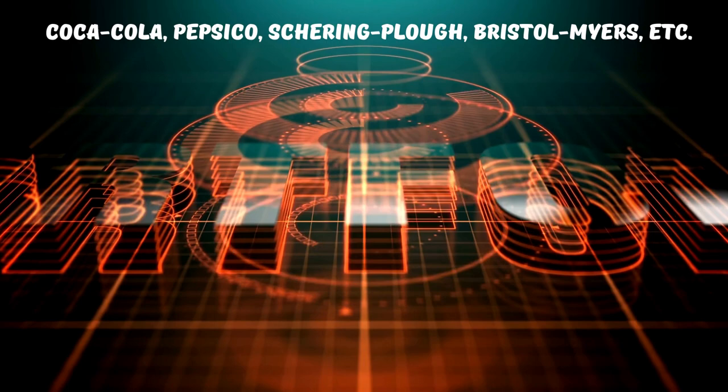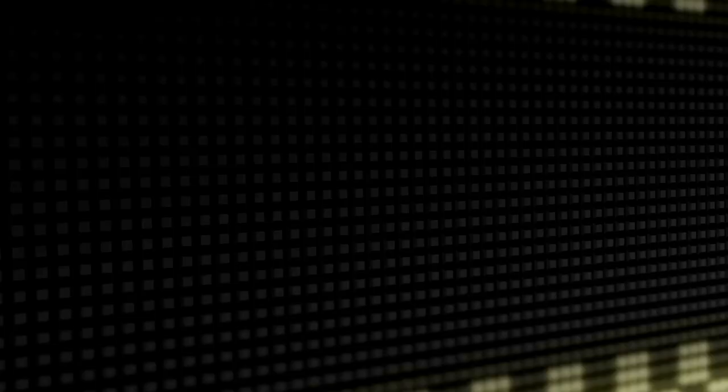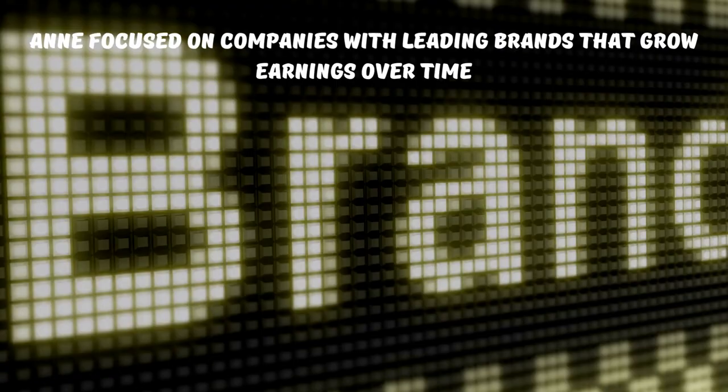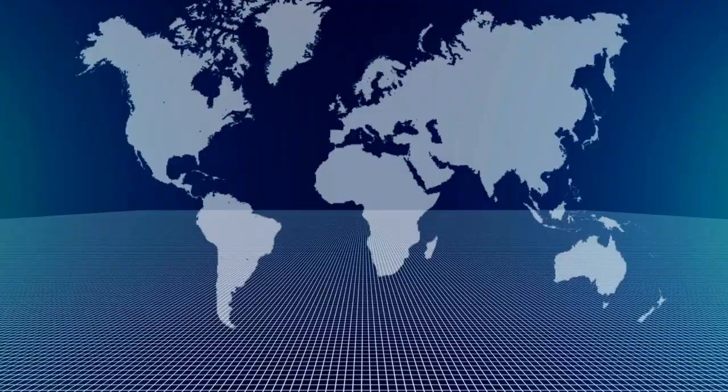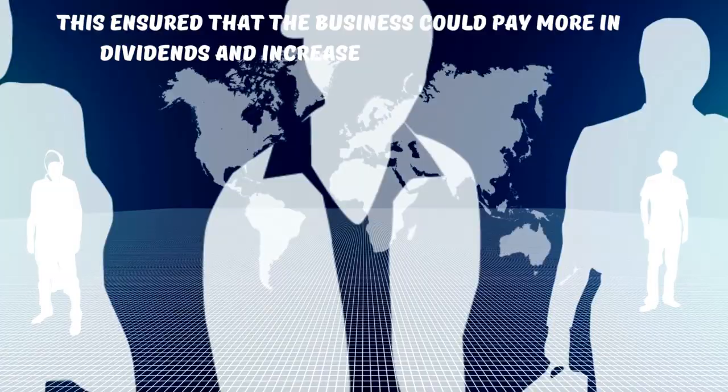She bought companies in industries that she understood, such as pharmaceuticals, beverages, and entertainment, and focused on companies with leading brands that grow earnings over time. This ensured that the business would pay more in dividends and increase its intrinsic value. Her strategy was to buy stock regularly and hold it for decades. This allowed her to take full advantage of the power of compounding.